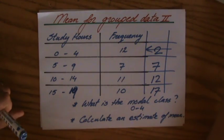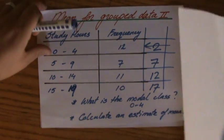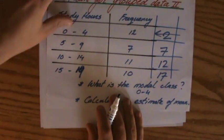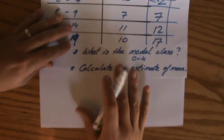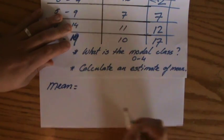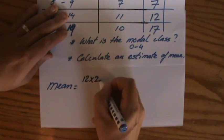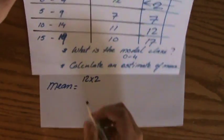Okay, and then to calculate an estimate of the amount of hours, an estimate of the mean, that will be then the mean. I'll just continue like this for you. So like you do with an ordinary frequency table, I will do 12 times 2, because the mid value is 2,